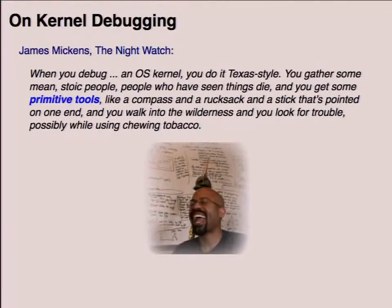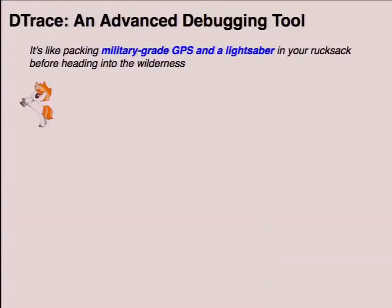Mickens goes on to say, when you debug an OS kernel, you do it Texas style. You gather some mean, stoic people who have seen things die, and you get some primitive tools — like a compass, a rucksack, and a stick that's pointed on one end — and you walk into the wilderness and you look for trouble, possibly while using chewing tobacco. DTrace helps there. I'd argue that DTrace is like packing military-grade GPS and a lightsaber in your rucksack before heading into the wilderness.